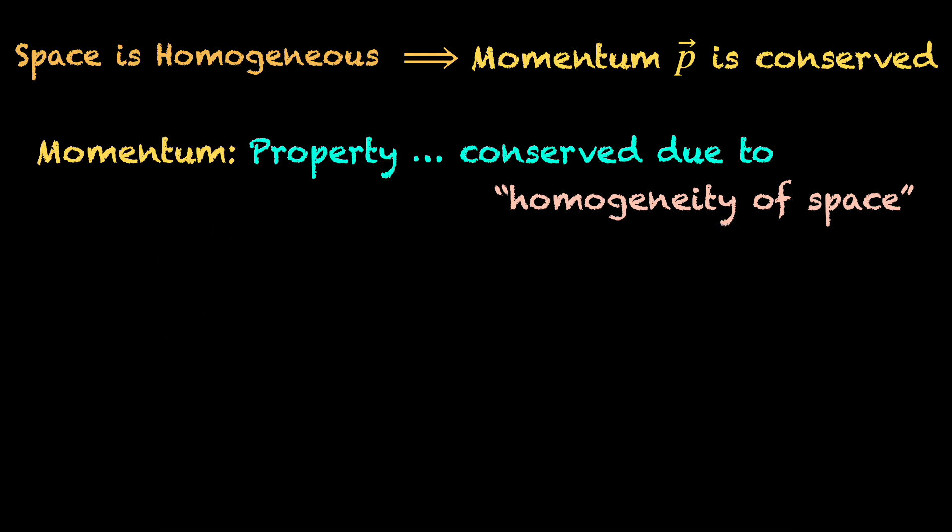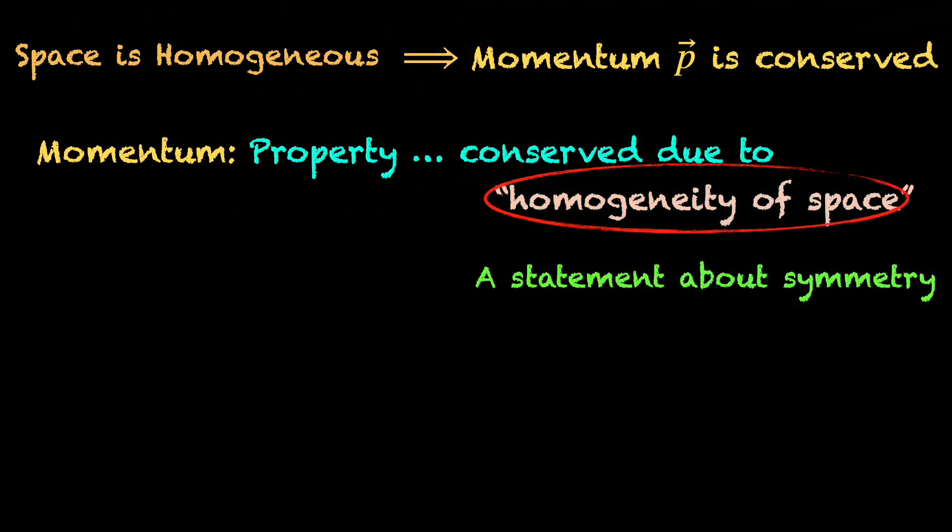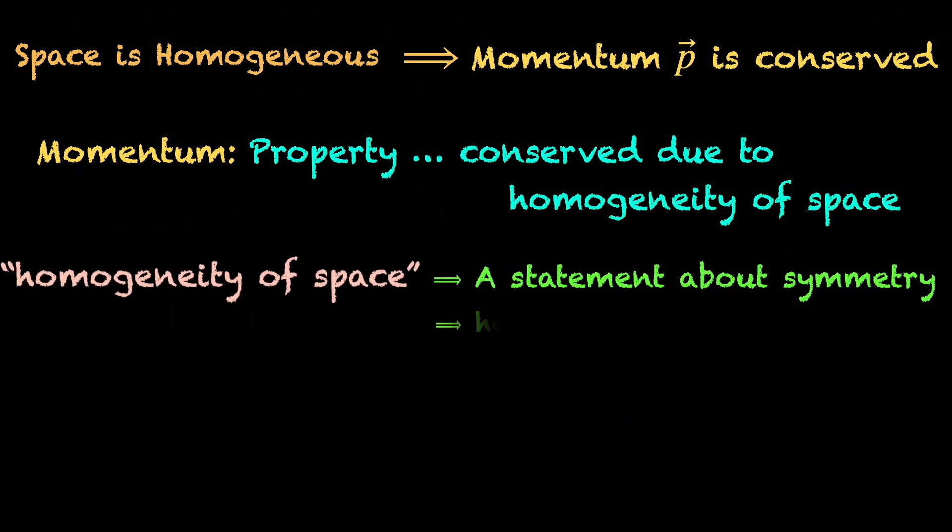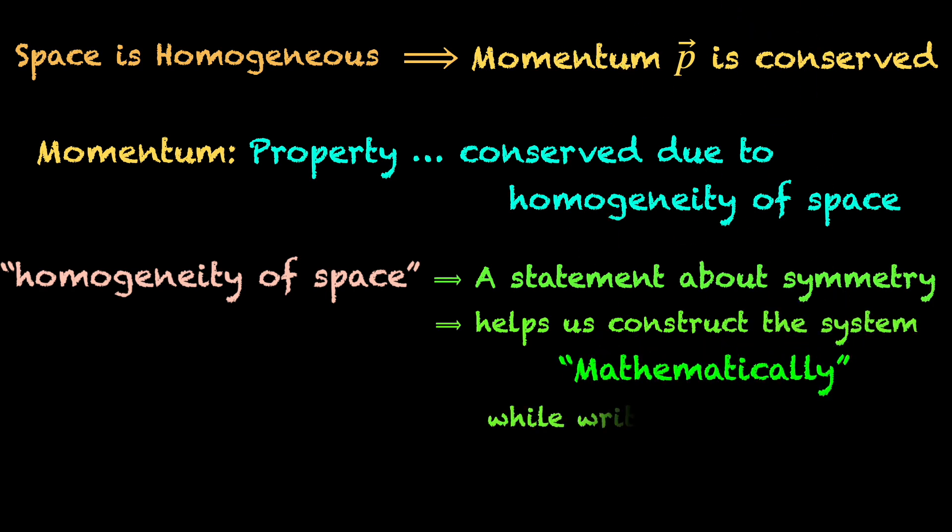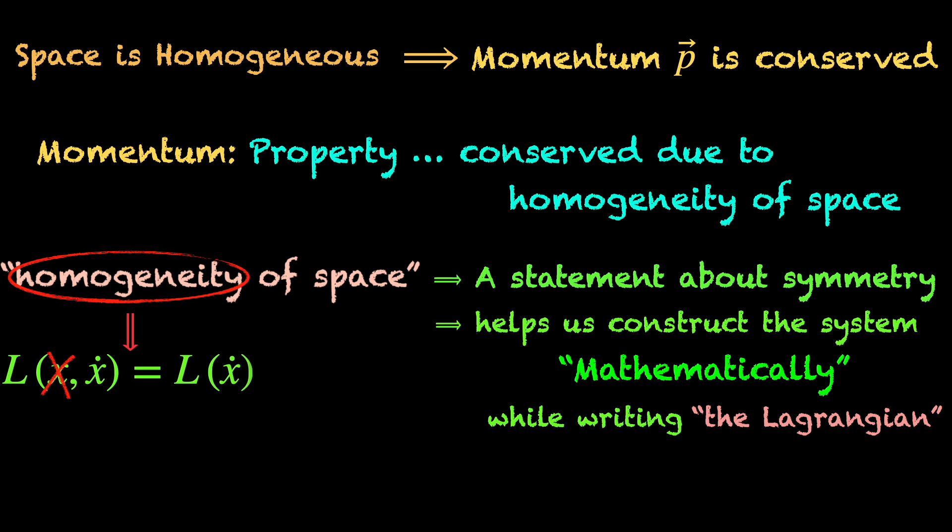Let's see how. When we say, for a physical system, space is homogeneous, it is a statement about the symmetry of that system. Something that helps us construct the mathematical model of that system. Basically, we get a hint about the Lagrangian of the system. Since for the system, all locations of space are the same, the Lagrangian L of that system cannot depend on the space coordinates. So, homogeneity of space means del L del x is equal to zero for the system.